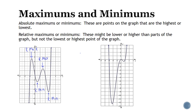For the second graph, we have a high point here. However, it is not the highest point, so it's just a relative max. Then we have two low points. The higher one is not the lowest point of the graph, so that one is a relative minimum. But the lower one down here has no points of the graph below it, so this is actually an absolute minimum.